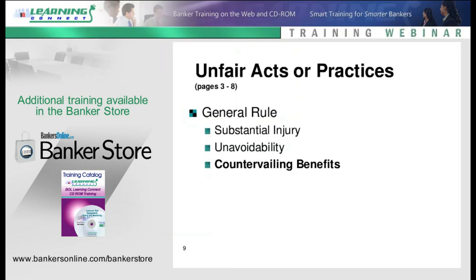When they look at damages, they're usually talking about dollar damages suffered by the consumer. Emotional impact and other subjective types of harm are generally not considered, though there are cases where it has been. On the unavoidability part of the rule, on page four, an act is not considered unfair if it can be reasonably avoided. The question is what could or should the consumer have done to avoid the injury. We generally view that they're unable to avoid the injury when your disclosures — or lack of disclosures — interfere with their ability to make effective decisions. If you've given them all the information, they could have avoided the injury.